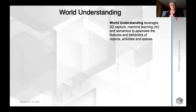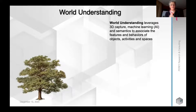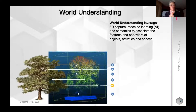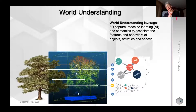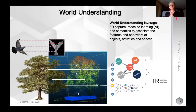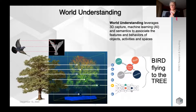There's another aspect — world understanding — which I think is very important. World understanding leverages semantic knowledge and 3D geometry to associate features and behaviors of objects and activities. For example, a tree being detected in 3D generates a point cloud or other model, which is then analyzed using AI to understand that this is a tree — it has the shape and behaviors of that class. You might also recognize a bird near the tree, and then infer that the bird is flying to it and will soon land. World understanding is a very important benefit of AR cloud.